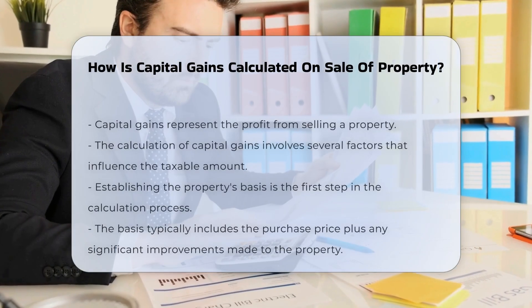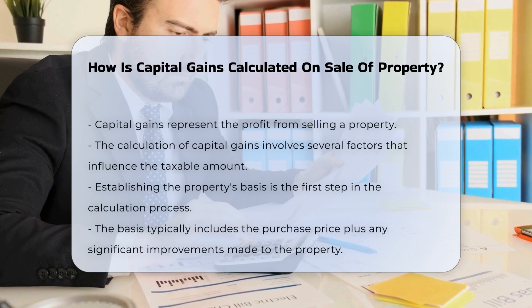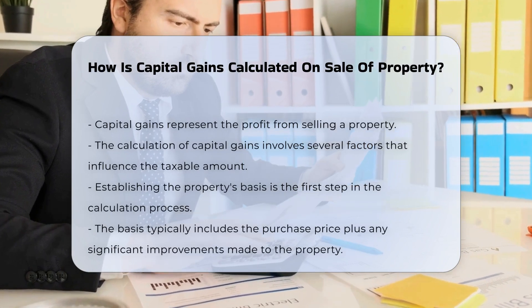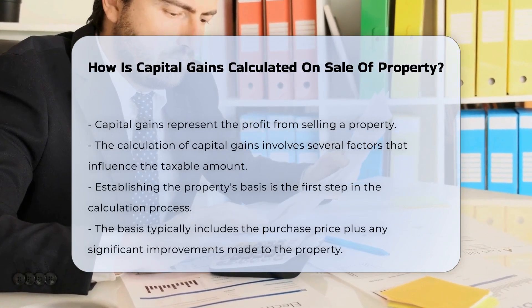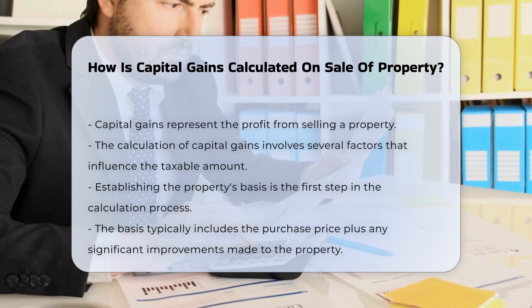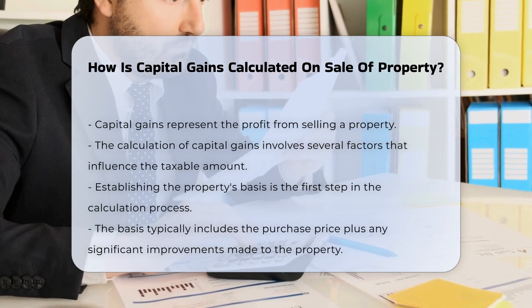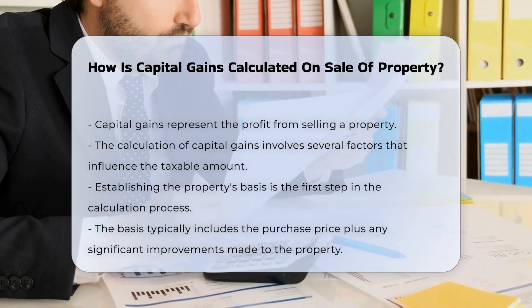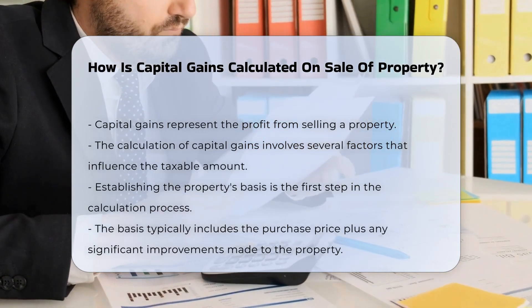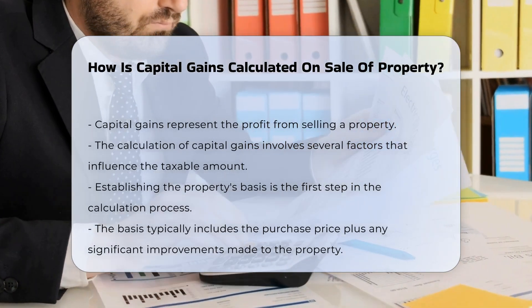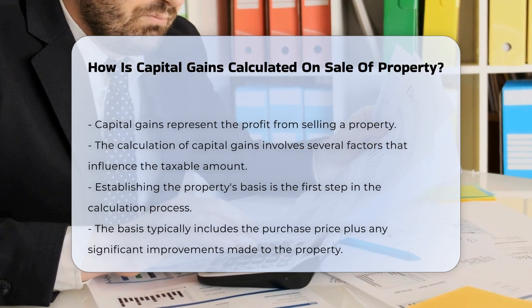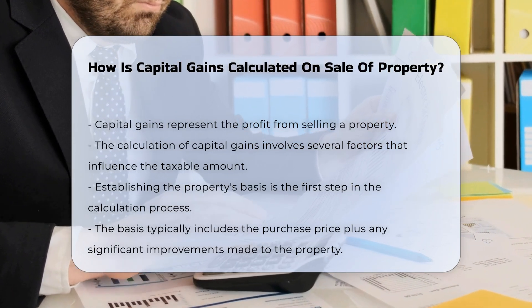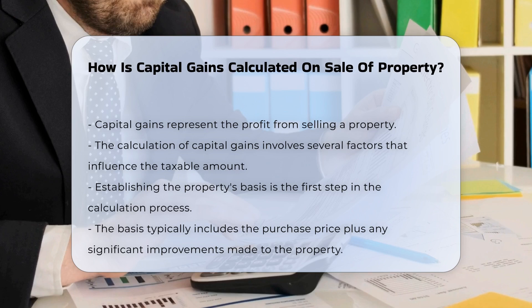Capital gains refer to the profit made from selling a property. This calculation involves several factors that determine the taxable amount. First, you need to establish the property's basis. The basis is usually the purchase price, plus any significant improvements made to the property.